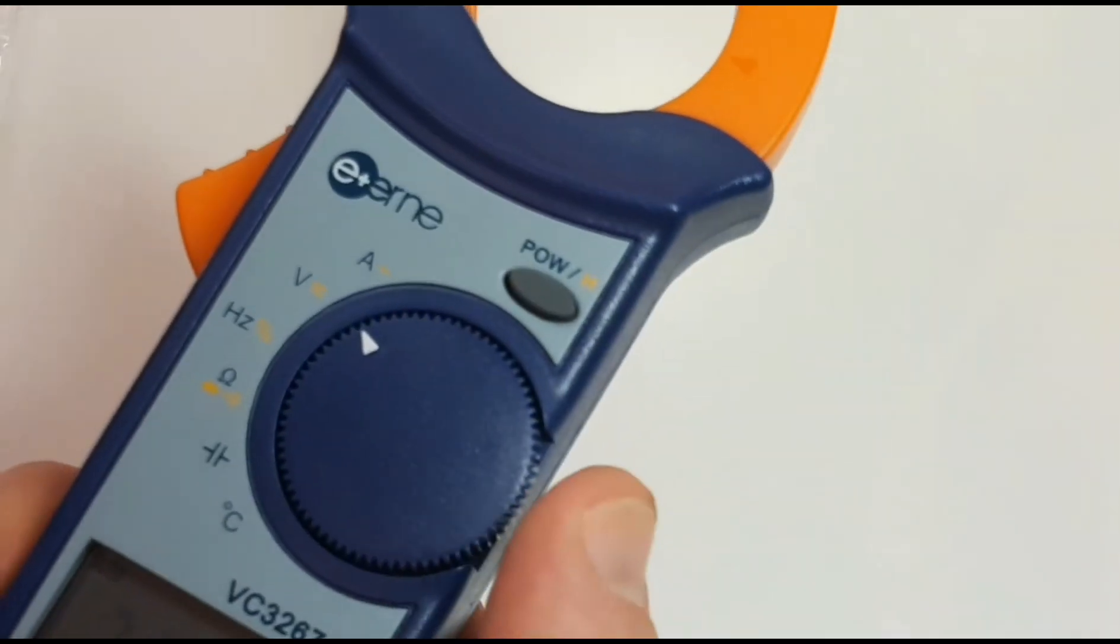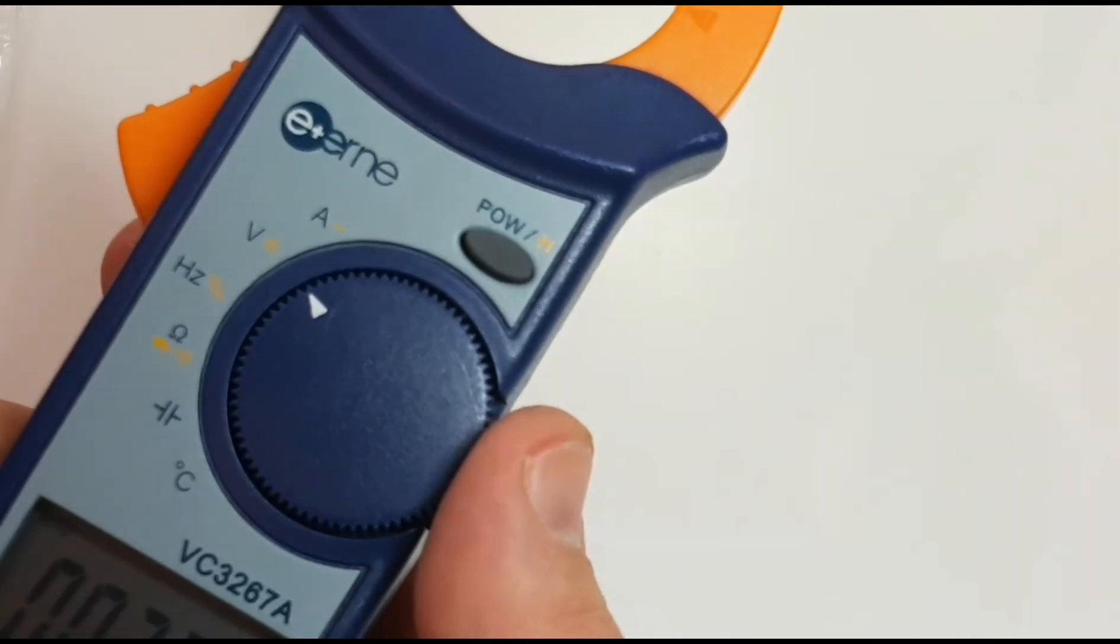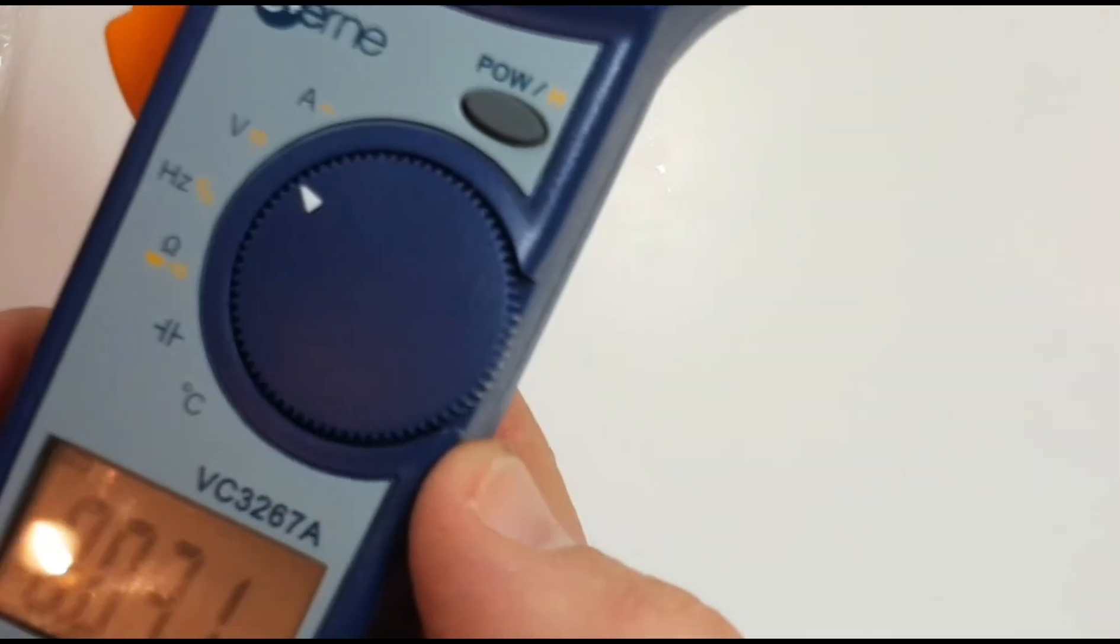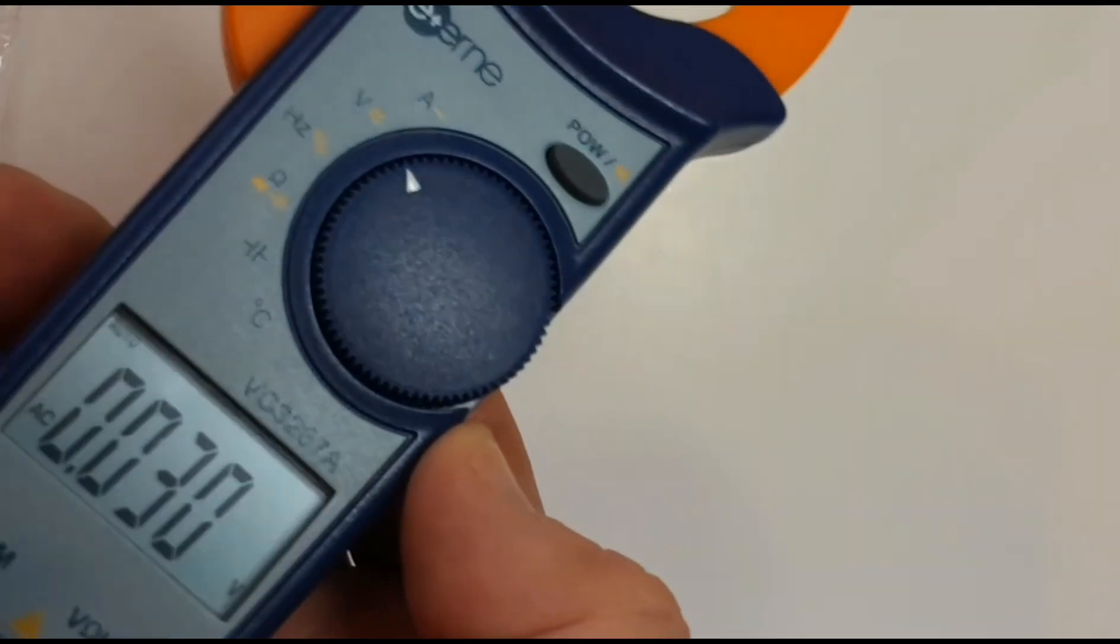So something so minor but it really makes a difference, especially when there is low level light conditions. It just makes things a lot easier to see. Speaking of low level light, there is no backlight on this clamp meter.